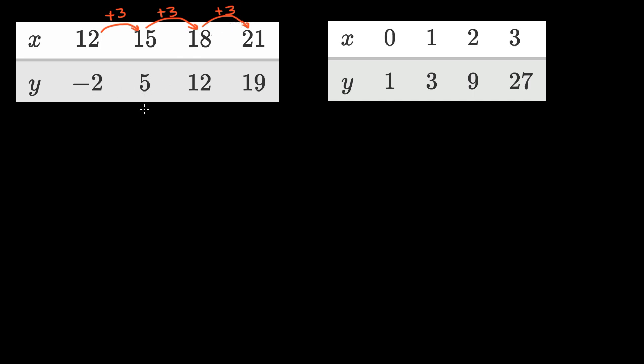...does y increase by a constant amount, in which case we would be dealing with a linear relationship? Or is there a constant ratio between successive terms when you increase x by a constant amount, in which case we would be dealing with an exponential relationship?